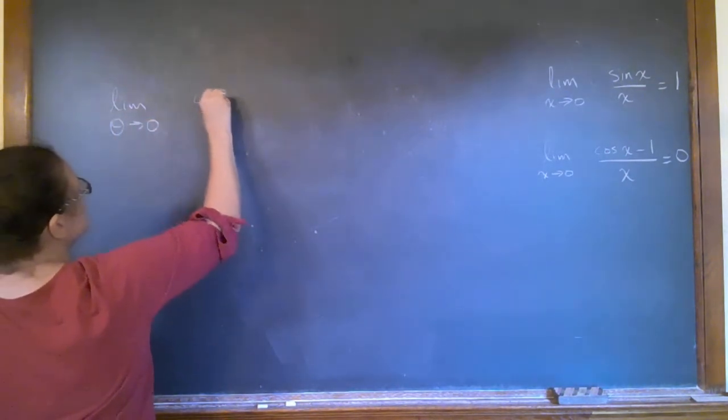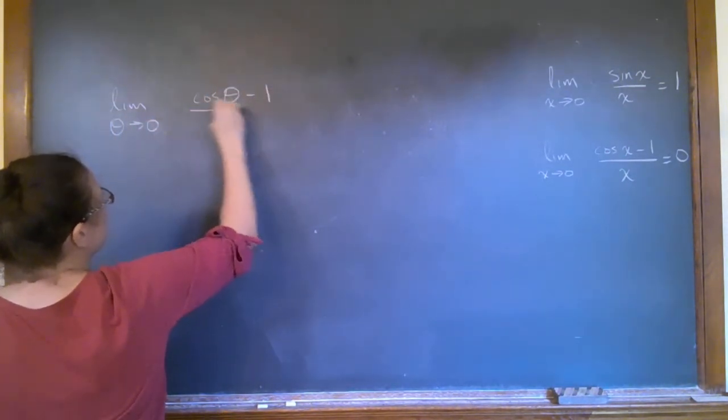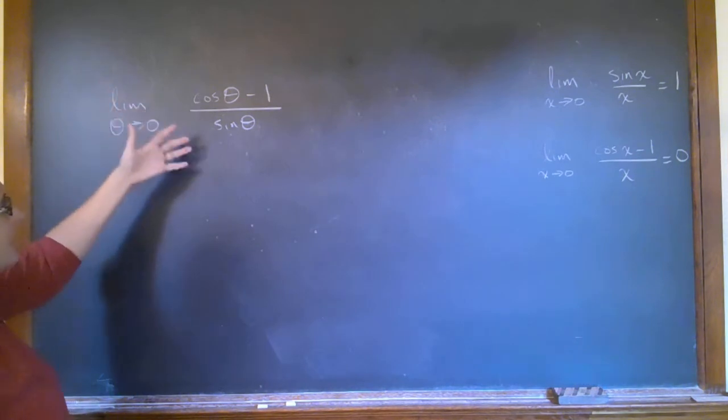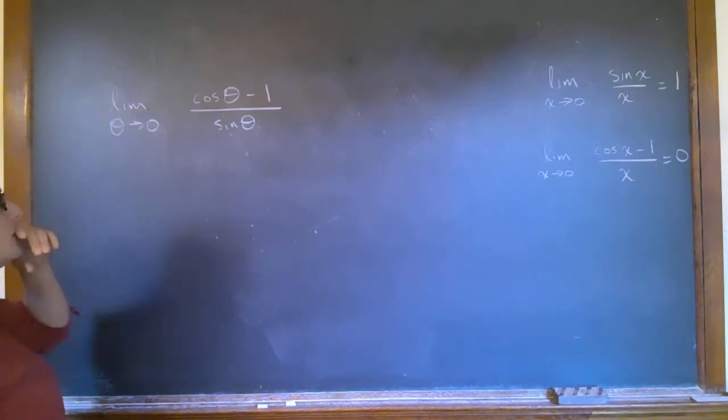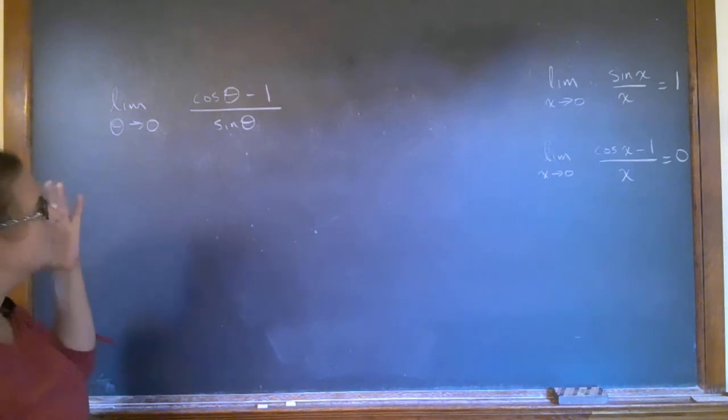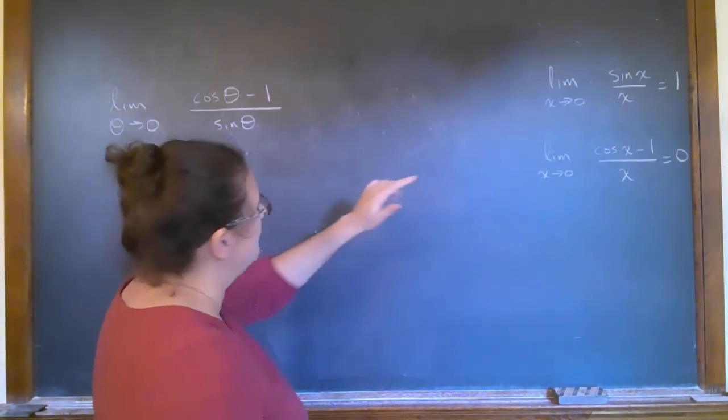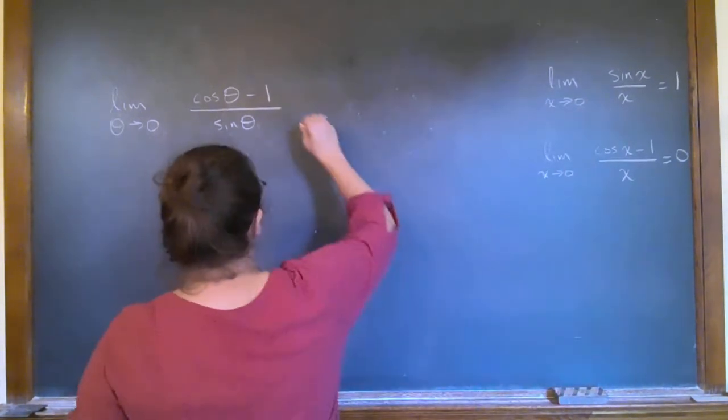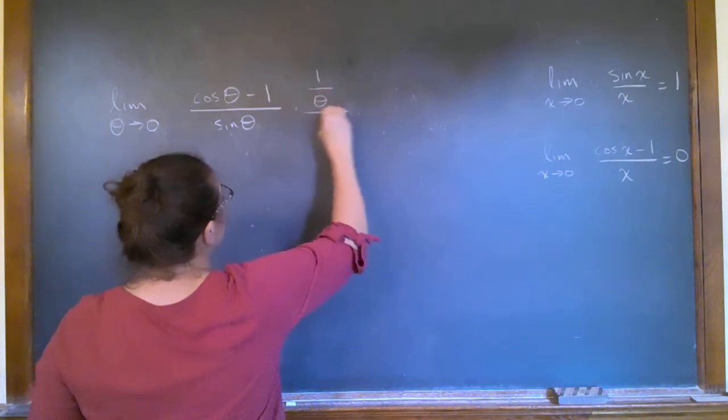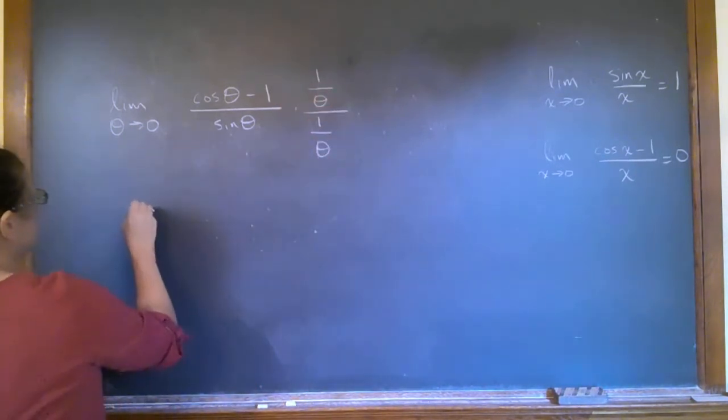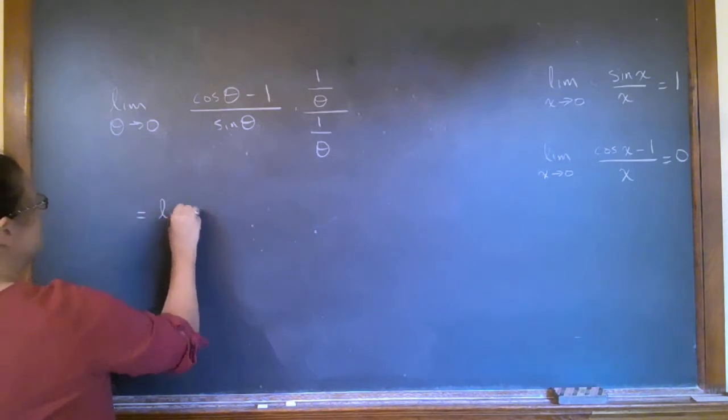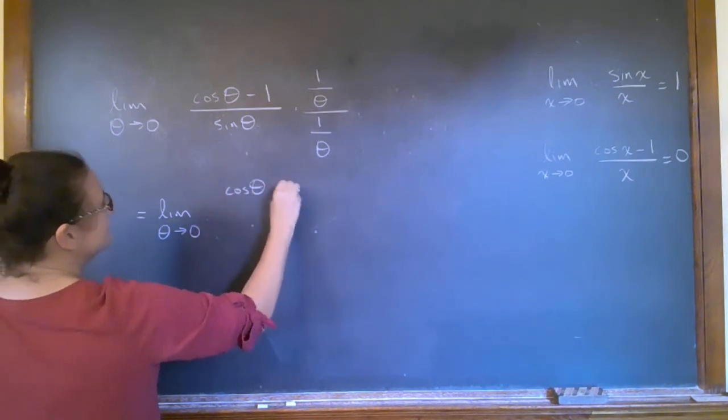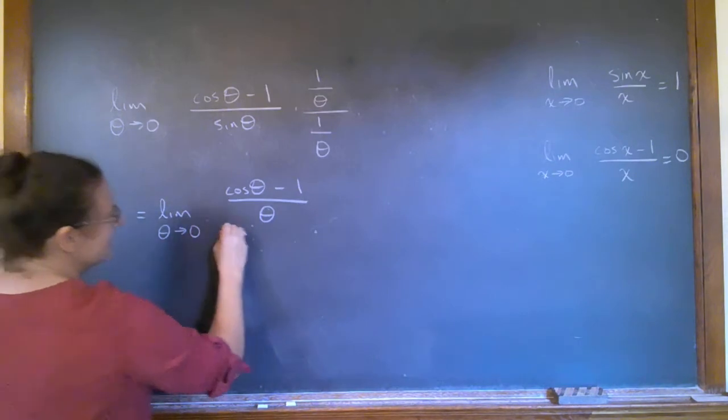One is cosine theta minus one over sine theta. So again, this is if I look at it, it's zero over zero. So I have to do something with it. But one thing you might notice is that that looks like the top of that, and that looks like the top of that. So if I divide top and bottom by one over theta.